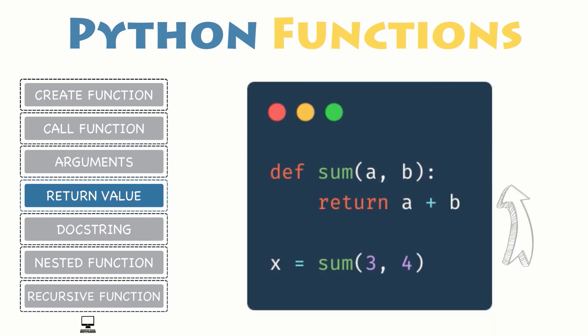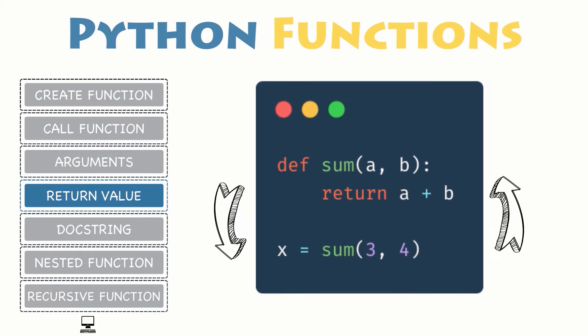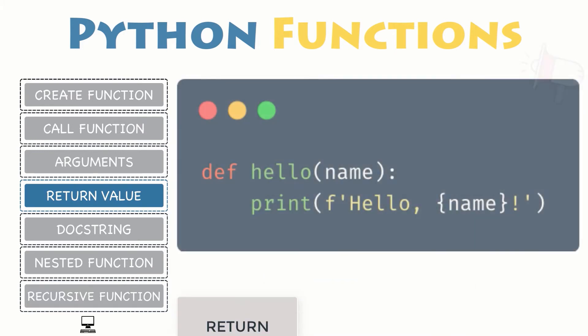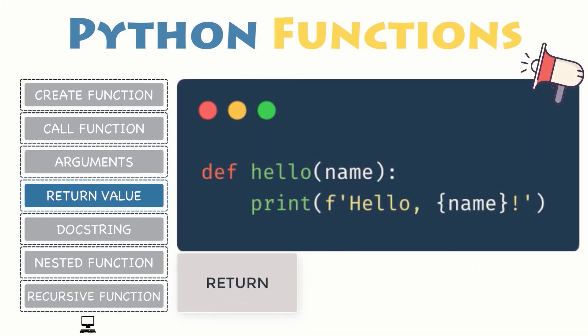To return a value from a function, simply use a return statement. Once a return statement is executed, nothing else in the function body will be executed. Remember, Python function always returns a value. Therefore, if you do not include any return statement, it automatically returns none.